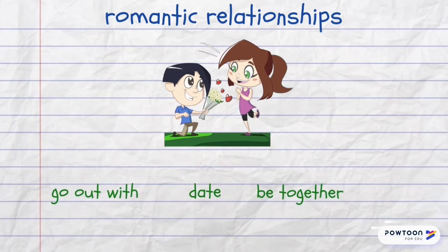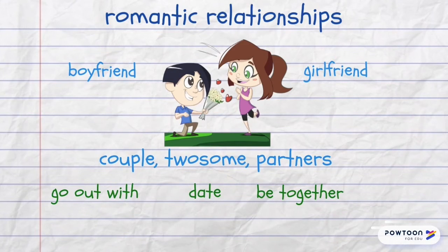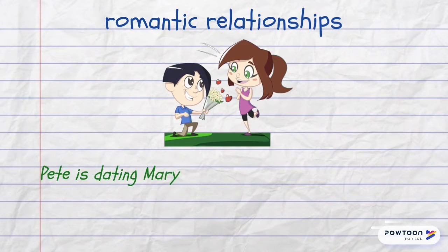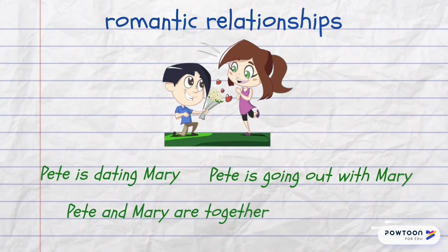When you start going out with someone or date someone, you become a boyfriend or a girlfriend. And when you are together, people say that you are a couple, a twosome, or that you are partners. For example: Pete is dating Mary. Pete is going out with Mary. Pete and Mary are together.